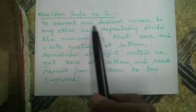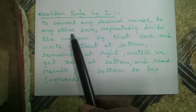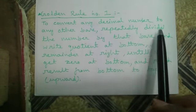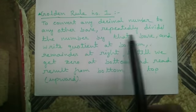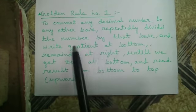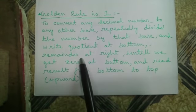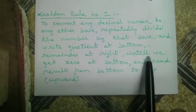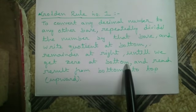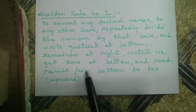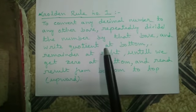Golden Rule Number 1: To convert any decimal number to any other base, repeatedly divide the number by that base and write the quotient at the bottom and remainder at the right until we get 0 at the bottom. Then read the result bottom to top, that is upward.